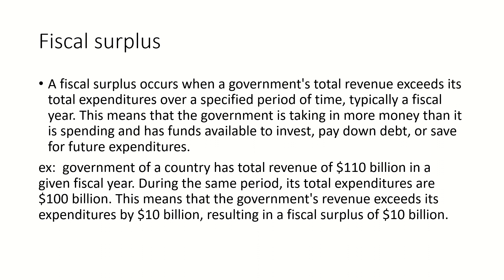For example, if a government has total revenue of $110 billion and its total expenditures are $100 billion in a given fiscal year, the government's revenue exceeds its expenditures by $10 billion, resulting in a fiscal surplus of $10 billion. This means the government is withdrawing money through taxes at a higher rate than it is spending on the economy.